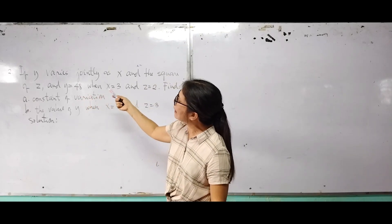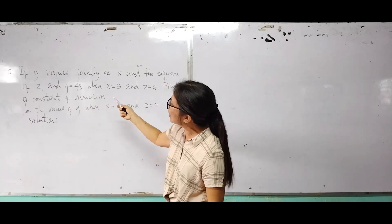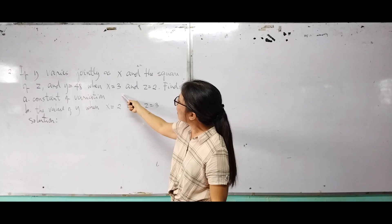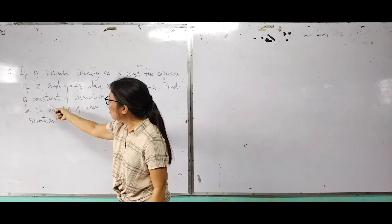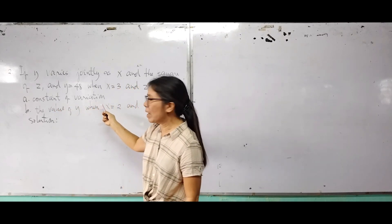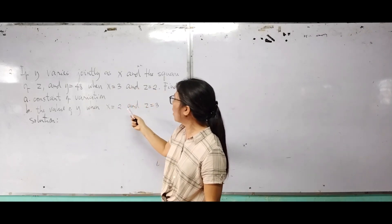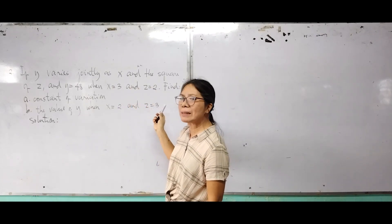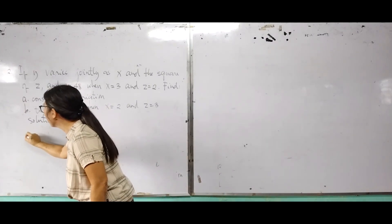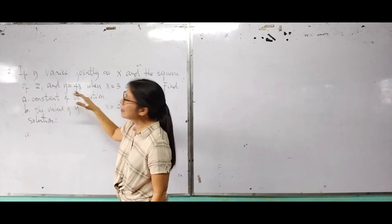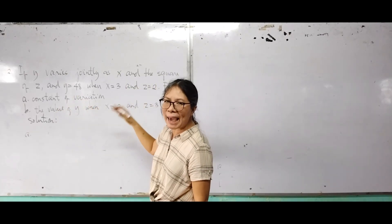Let's now go to the second example. If Y varies jointly as X and the square of Z, and Y equals 48 when X equals 3 and Z equals 2, find: A) the constant of variation, and B) the value of Y when X equals 2 and Z equals 3.